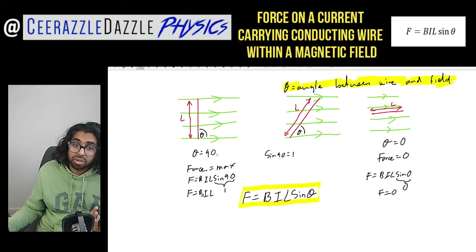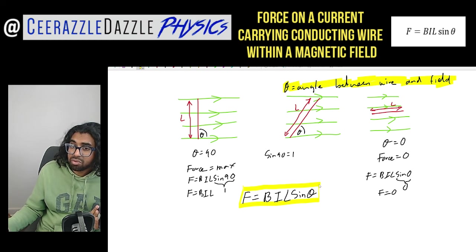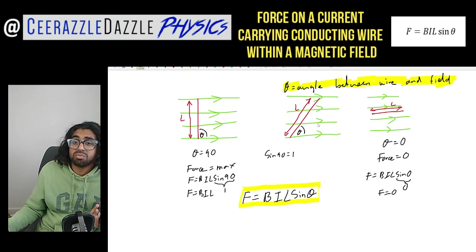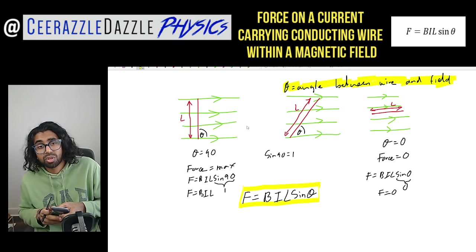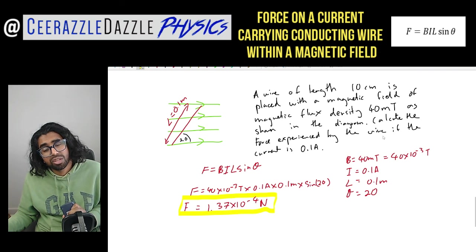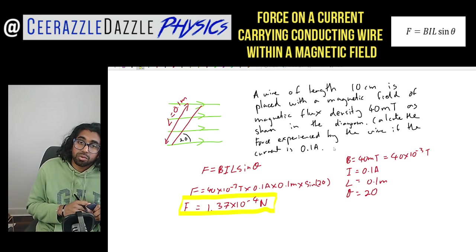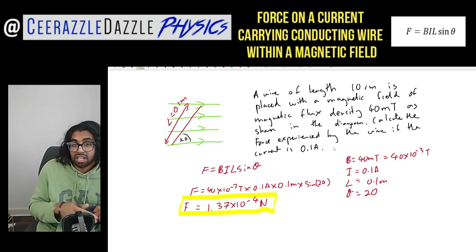For the more general expression when the wire is tilted, we use F = BIL sine(theta). This gives maximum force when theta = 90° (sine 90 = 1) and zero force when theta = 0° (sine 0 = 0), consistent with our physical understanding. I then walked you through the example problem, plugging in the values to get the result. See you next time for another session on electromagnetism and physics!